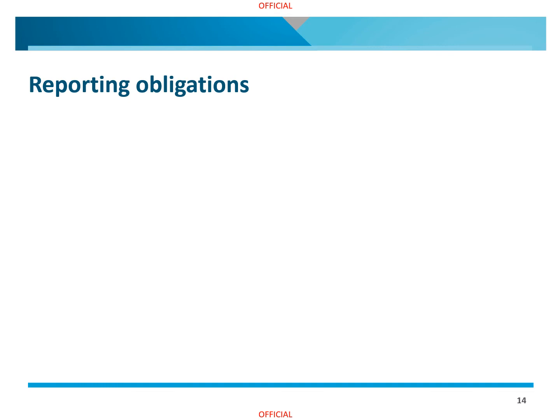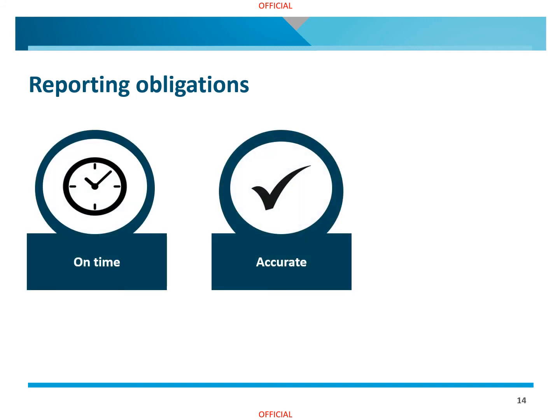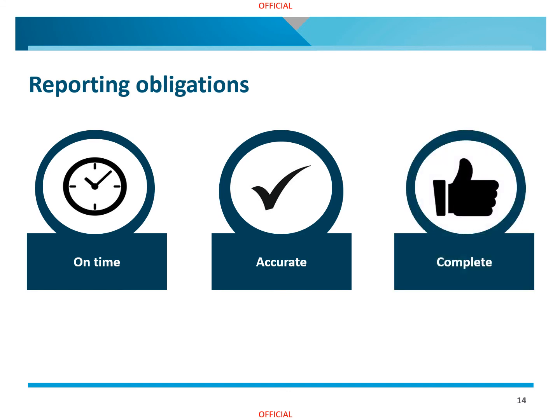Under the NGER Act, corporations that meet an NGER threshold must register and, once registered, report each year before midnight of the 31st of October Australian Eastern Standard Time. Registered reporters have a responsibility to ensure that their NGER reports are submitted on time, that they are accurate and that they are complete. Please note that if the date of the NGER reporting deadline falls on a public holiday or weekend day, the deadline falls to the next working day. This will be the case for reporting in 2020 and 2021.